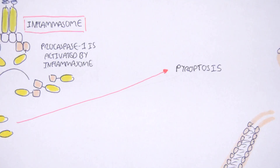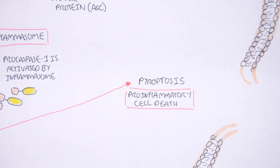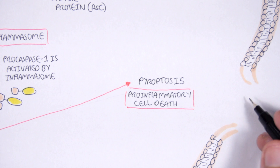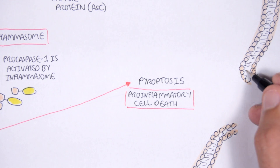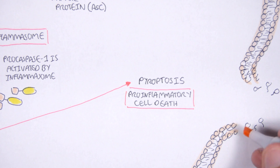Under certain conditions, activation of the inflammasome will lead to cell death — the term is pyroptosis, which comes from the Greek words for fire and falling. Pyroptosis is different from apoptosis: it is associated with a high inflammatory state and frequently occurs upon infection with intracellular pathogens.